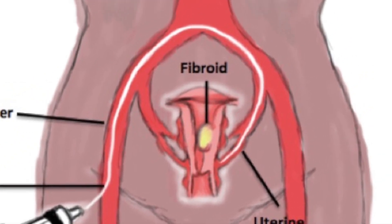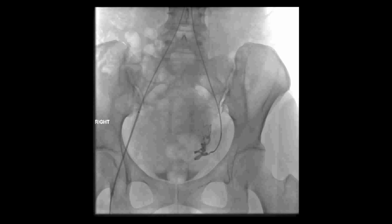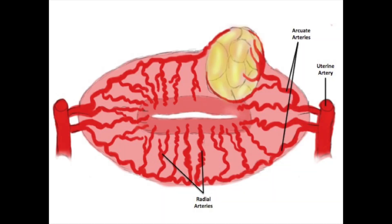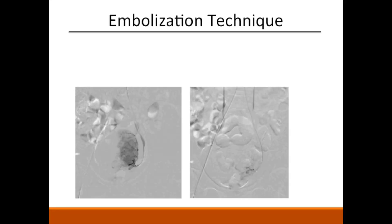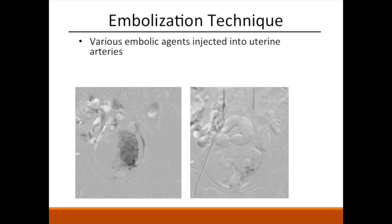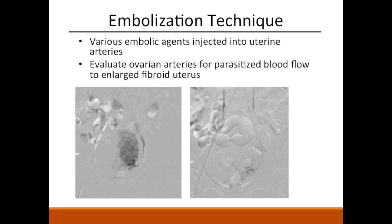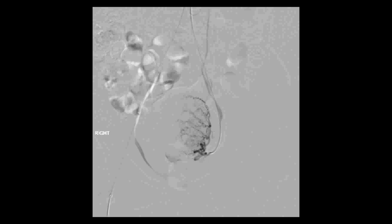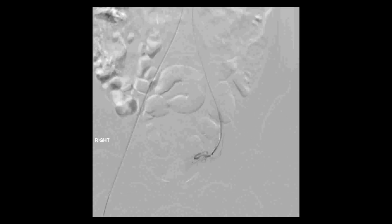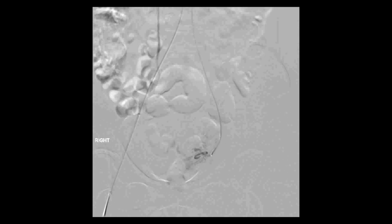Under fluoroscopic guidance, the catheter is guided through the artery to the uterus and advanced to the site of the fibroids. With angiography, the uterine artery origin is identified and normal versus variant anatomy is confirmed. Due to the tortuous nature of the uterine artery, atraumatic catheter advancement is essential to prevent vessel spasm. Once the fibroids are located, various embolic agents are injected. The ovarian arteries are evaluated for any parasitized blood flow to the enlarged fibroid uterus. A series of angiographic images are obtained pre- and post-embolization to ensure proper occlusion of blood flow to the fibroids.